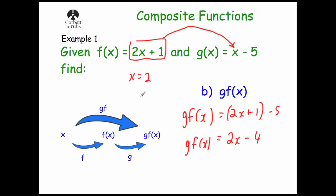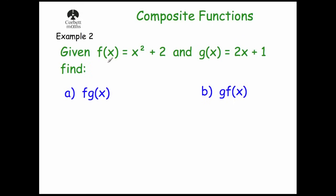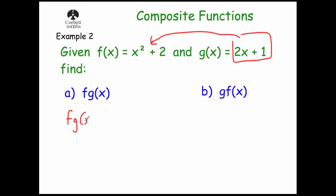Let's try some examples without the diagram. Example 2: given f of x equals x squared plus 2 and g of x equals 2x plus 1, find fg of x. So to find fg of x, we take our g of x and put it into f of x in for the value of x. So fg of x equals — instead of x squared, we put our 2x plus 1 in brackets, squared — and then plus 2. So we just replace the x with our g of x function.